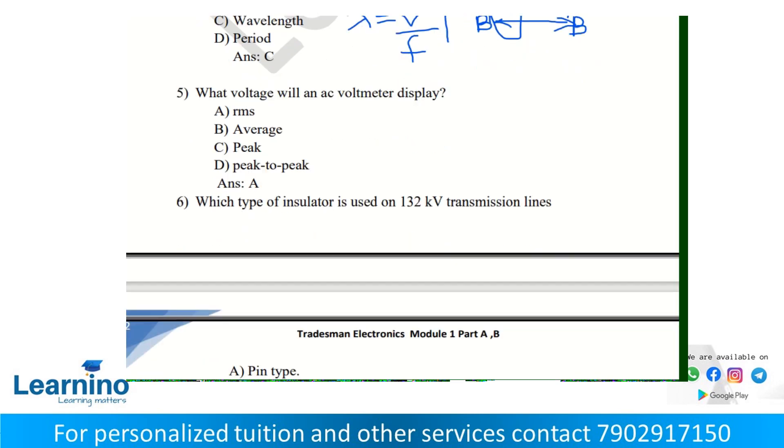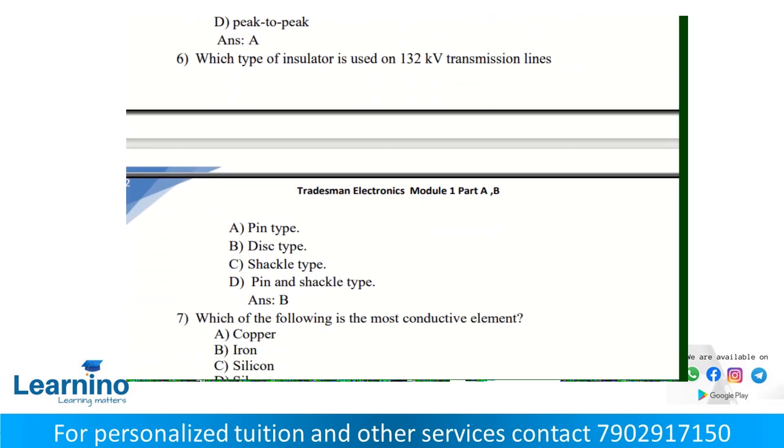Which type of insulator is used on 132 kilovolt transmission lines? For less than 33 KV, pin type insulators are used. Since this is high voltage, we use disc type insulator. Suspension insulators are used to provide insulation and support to line conductors in suspension and tension systems.